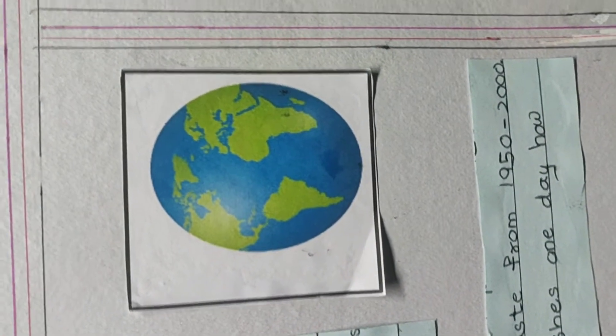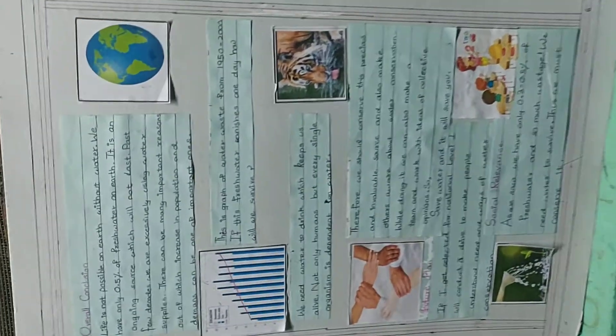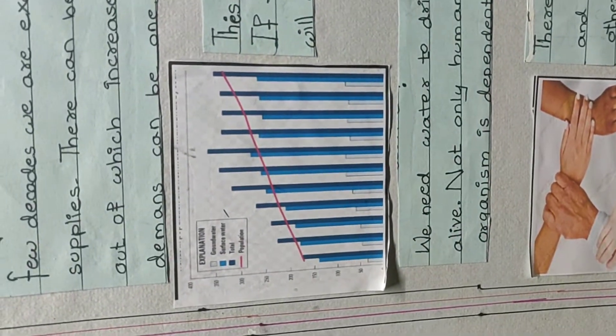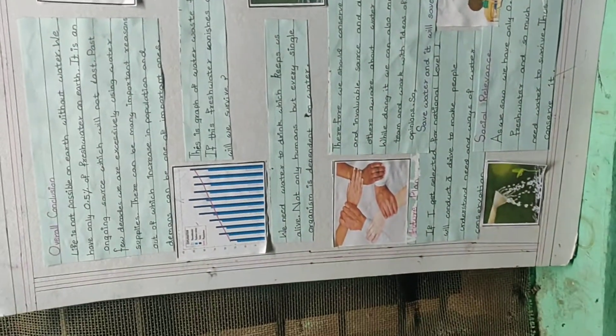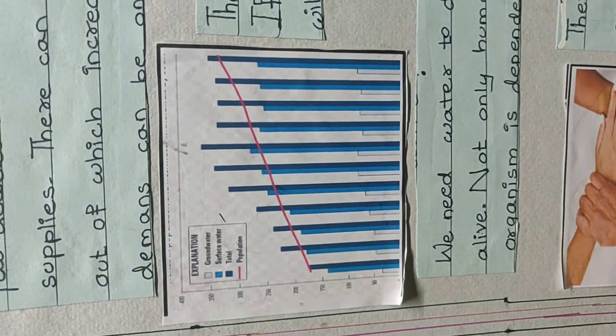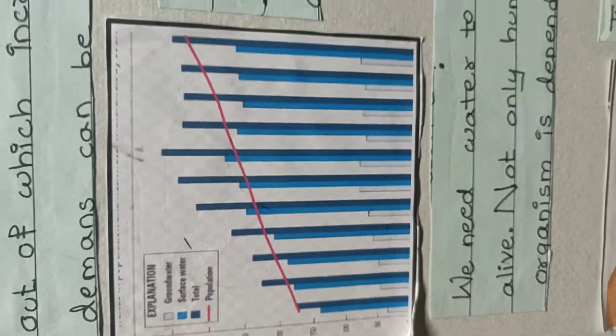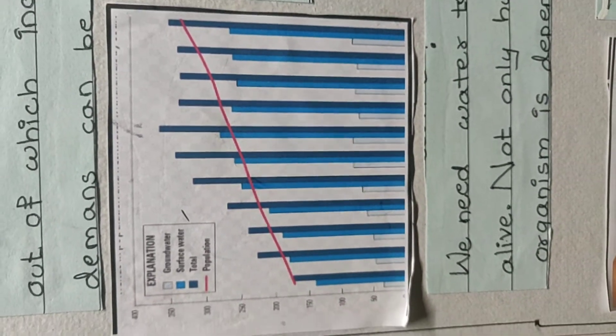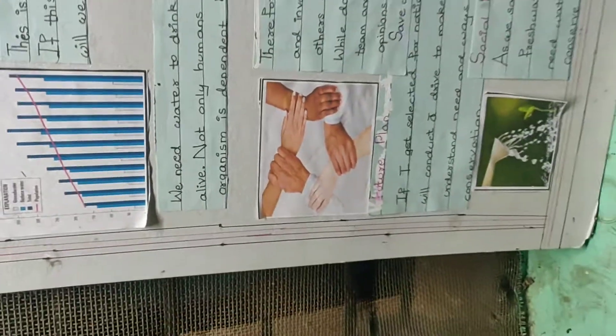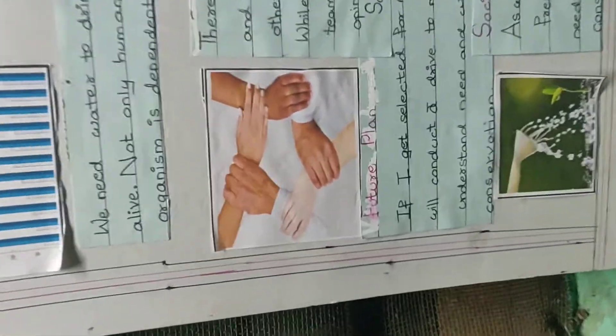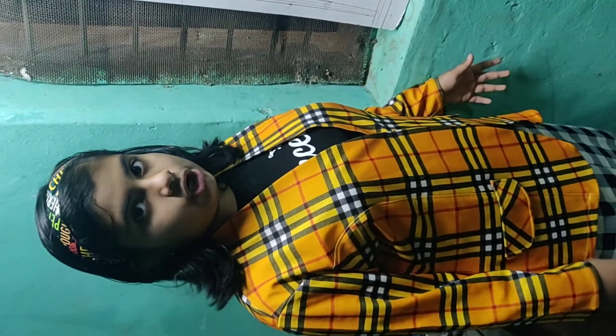Overall Conclusion: Life is not possible on earth without water. We have only 0.5% of fresh water on earth — it is a finite source and will not last forever. Over the past few decades, we have been excessively using water supplies, with important reasons being increase in population and advanced demands. This is a graph of water wastage from 1950 to 2000. If this fresh water vanishes one day, how will we survive? Not only humans but every single organism is dependent on water. Therefore, we should conserve this precious and invaluable resource and make others aware about water conservation. We can make a team with supportive ideas and work together. That is why: save water and it will save you.